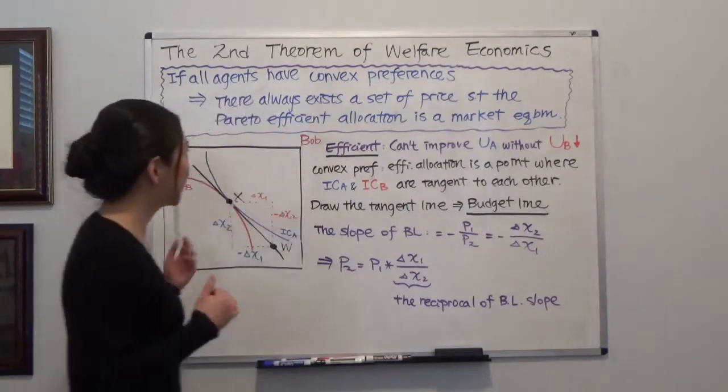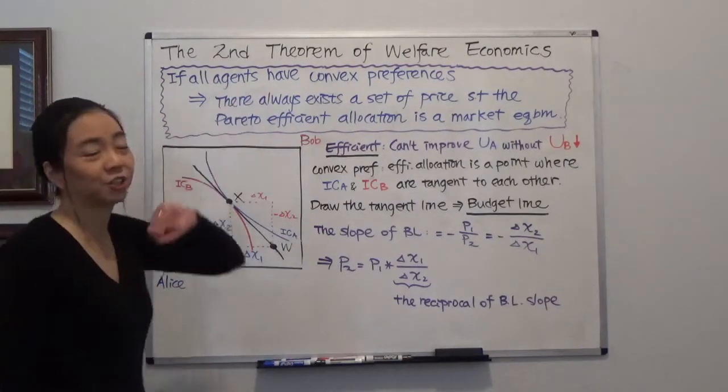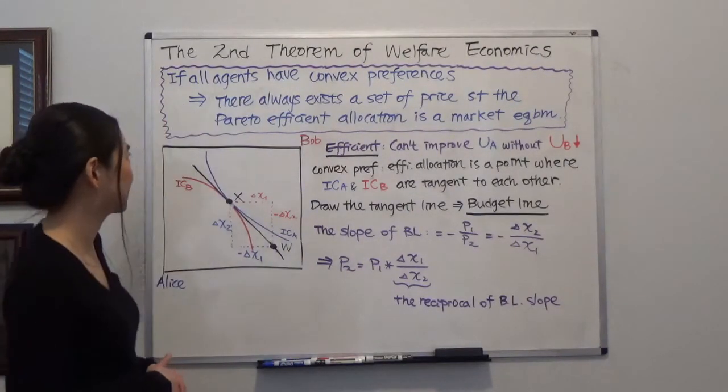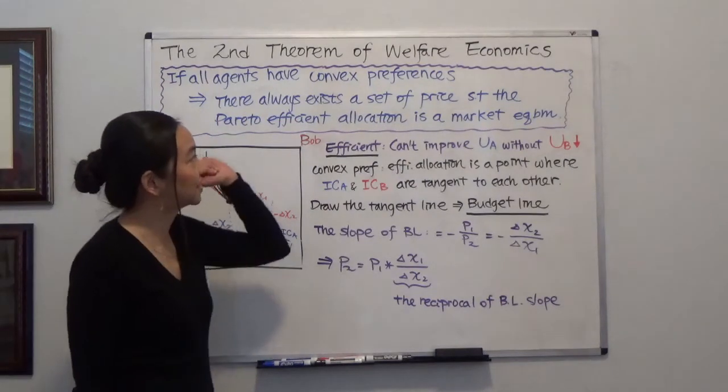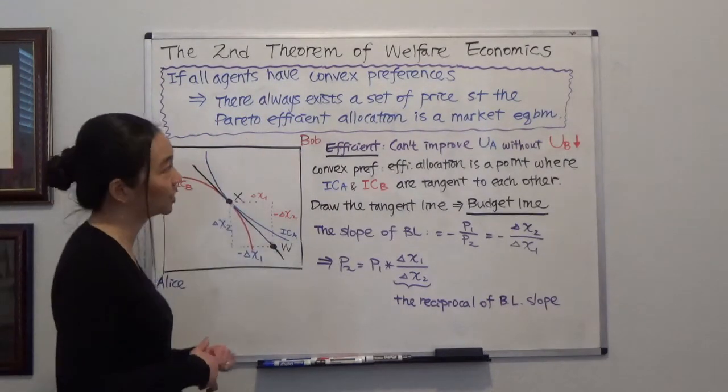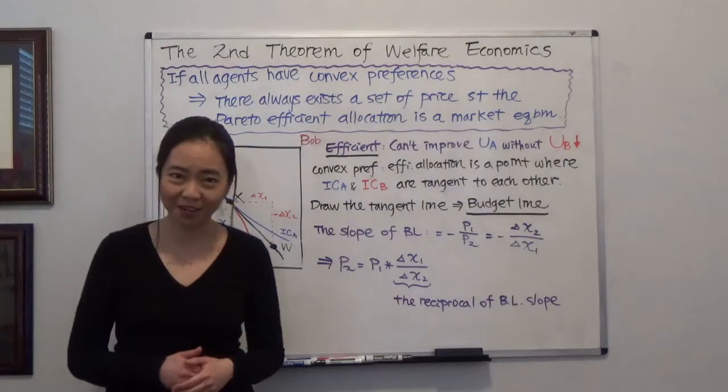So bottom line first, the theorem tells you if all agents have convex preferences, then there always exists a set of prices such that a Pareto efficient allocation is also a market equilibrium.